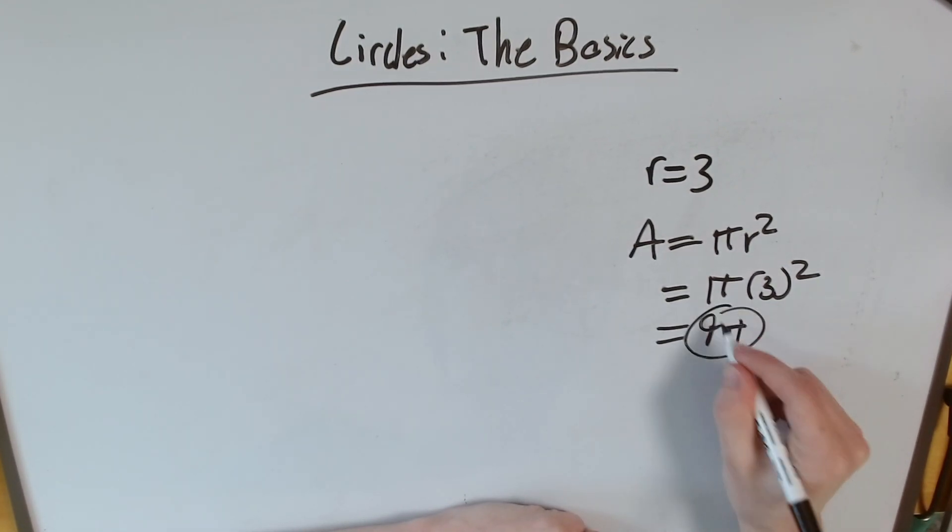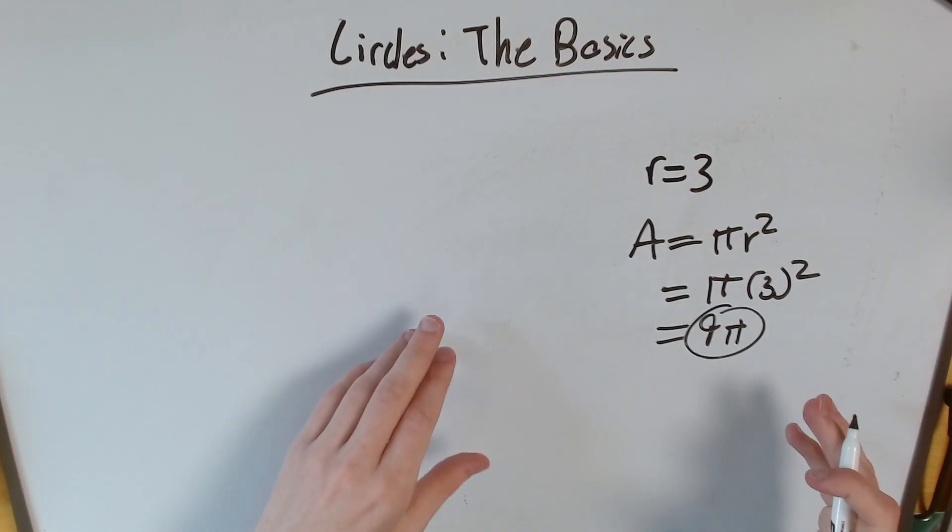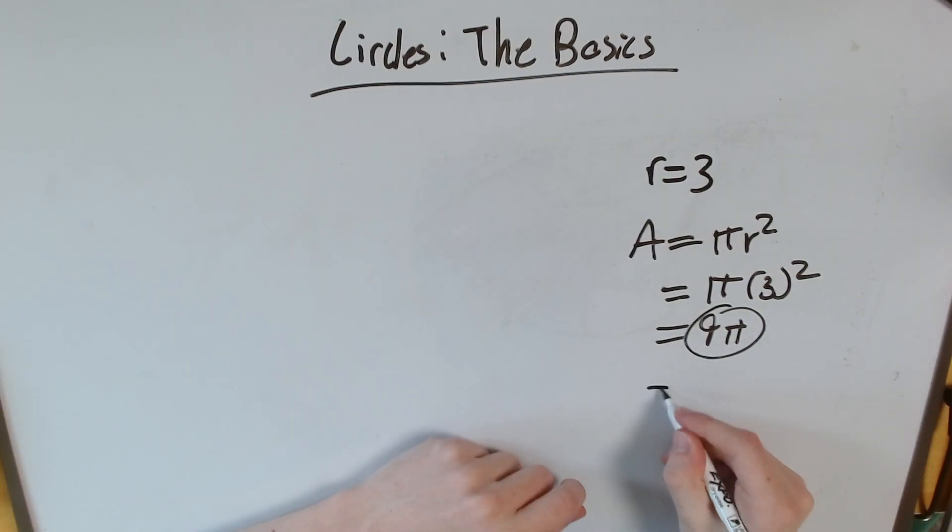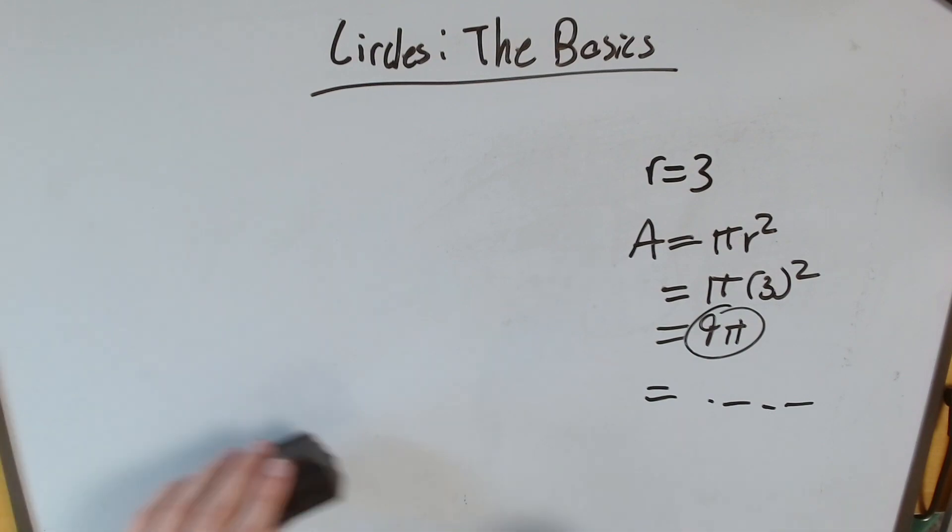And usually, if you don't have a calculator, that's how you leave it. Because remember, pi goes on for infinity, so we can't really have a final exact answer. What if they say use the calculator to three decimal points? Well, I do the math and I just do dot blank blank blank for my three decimal points.